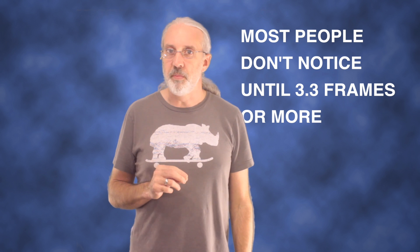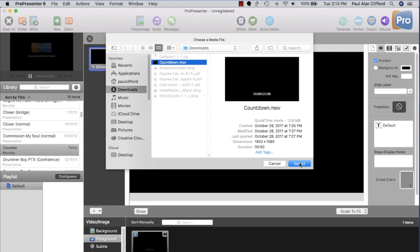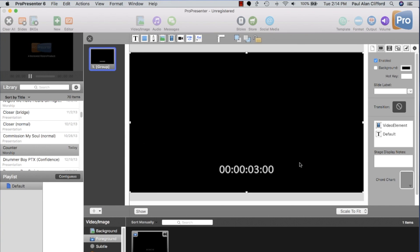I created a 3-minute counter in Final Cut 10 and exported it as a 30 frame per second video. Next, I brought that into ProPresenter 6 and put it onto the Slides layer so I could resize it.